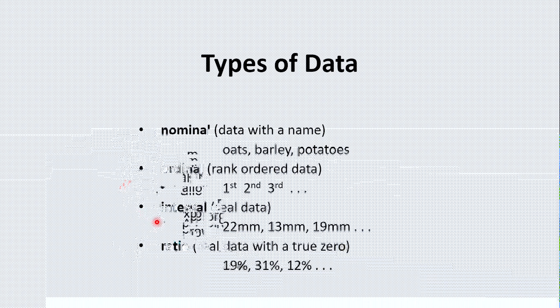Once again, interval, typically, is a measurement on some kind of line, some kind of scale. Ordinal is anything you're counting which has a numerical value that you can put into rank order. And nominal is anything that's name-based. All right.